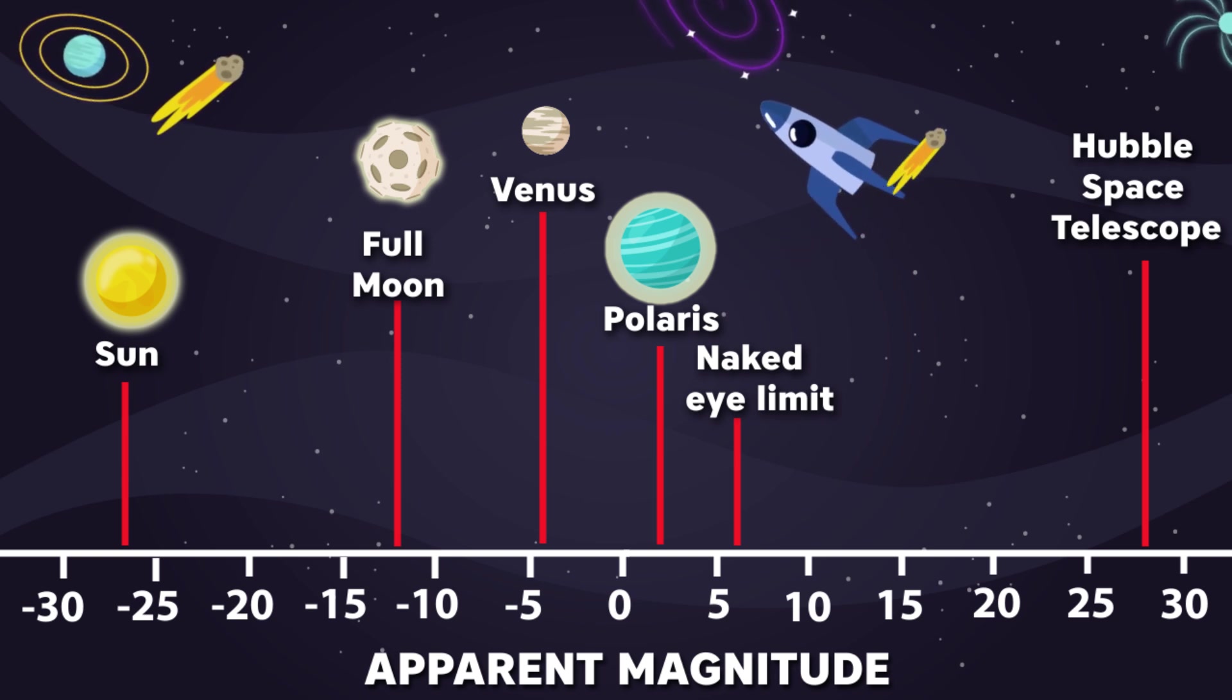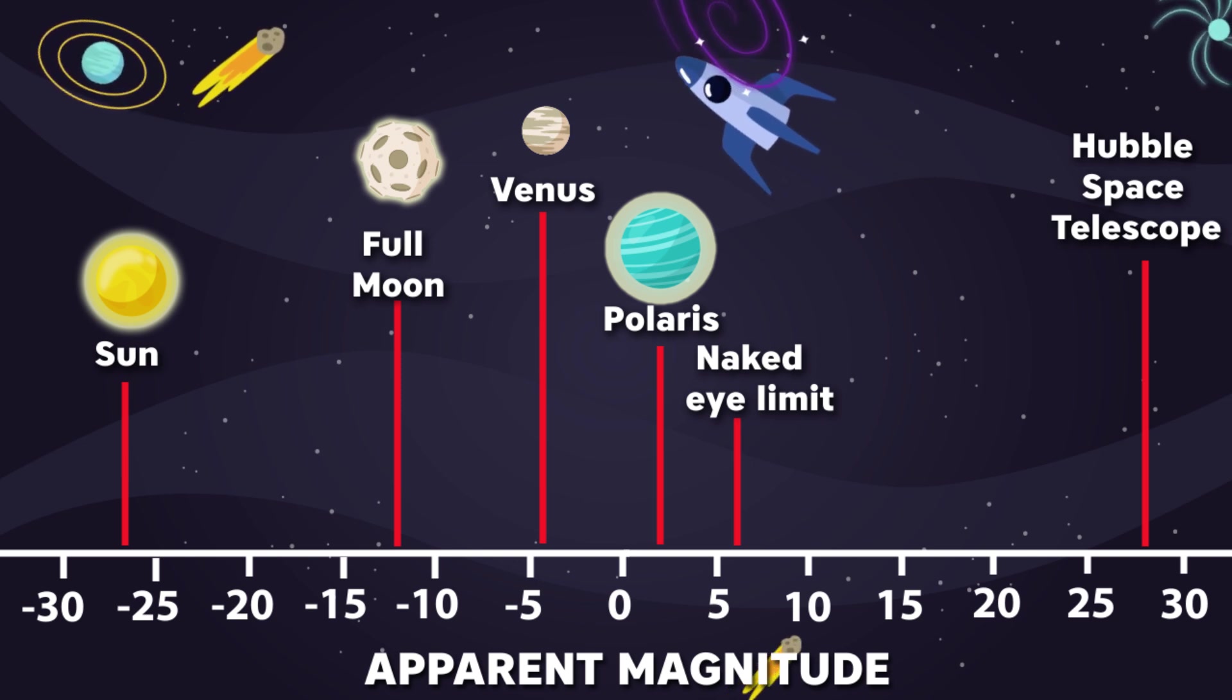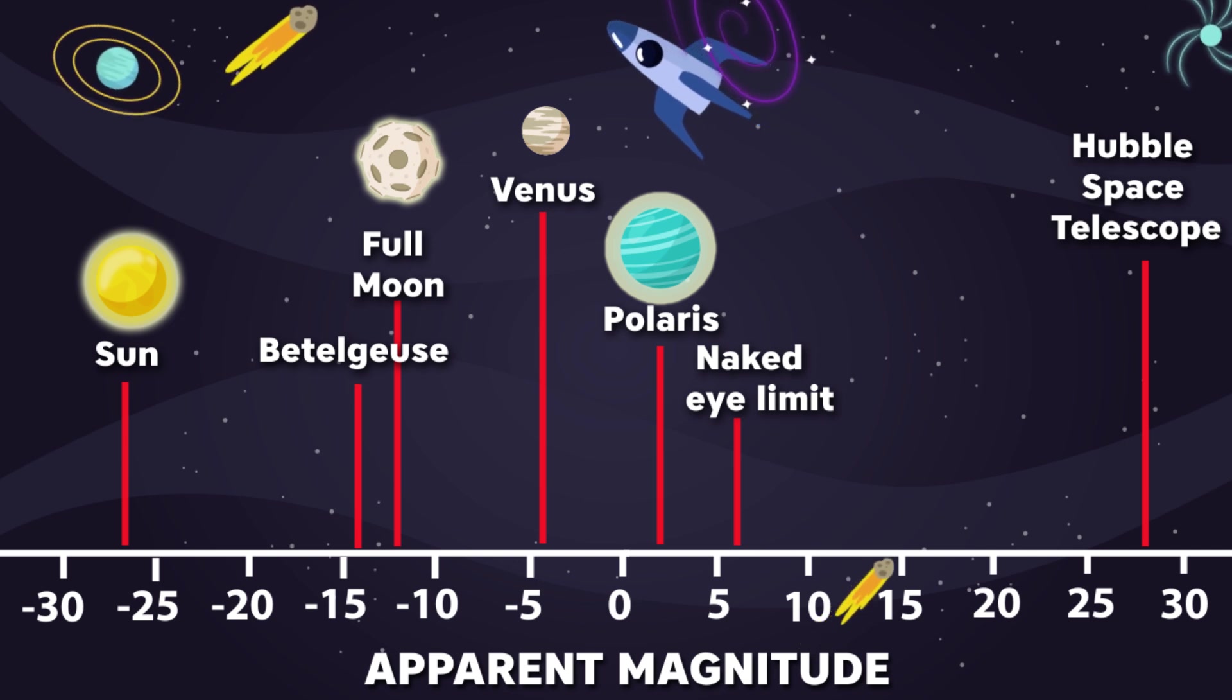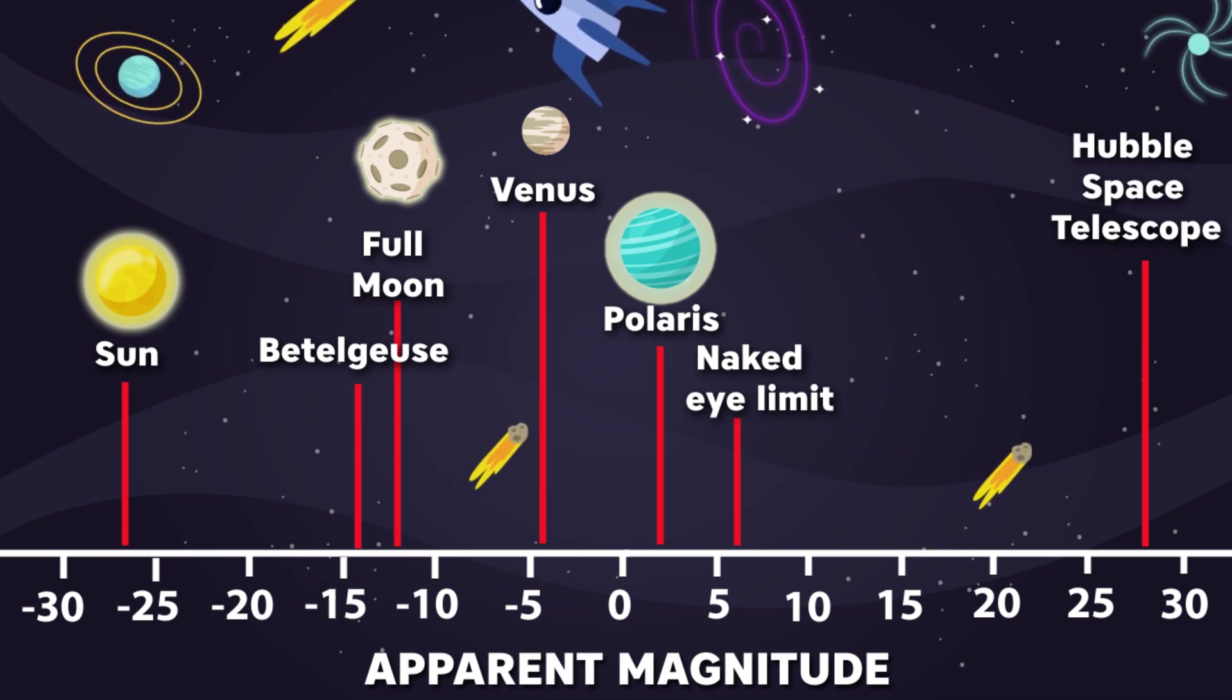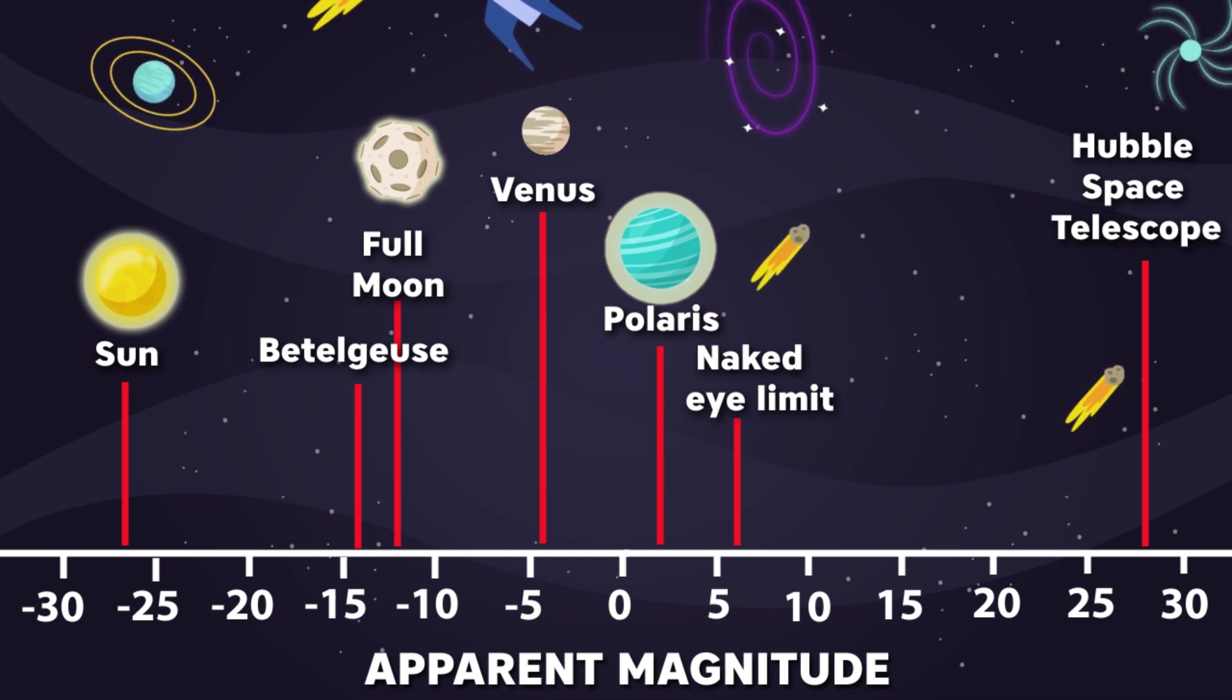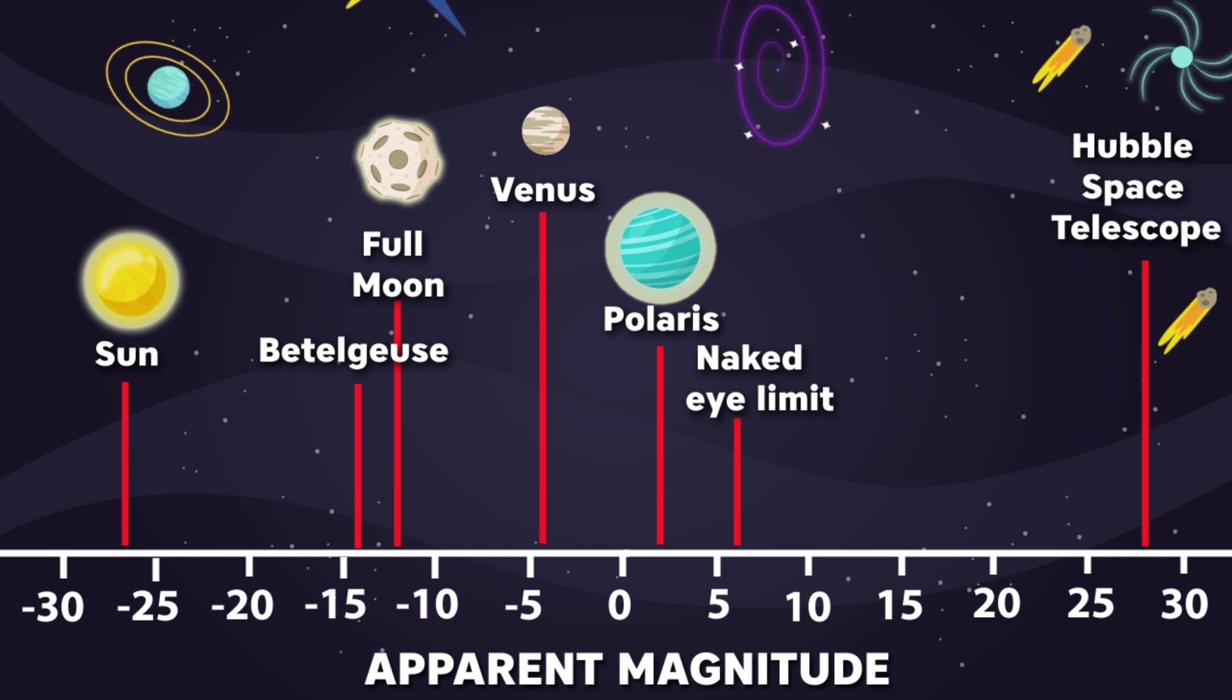Betelgeuse here is expected to be minus 14, brighter than the full moon and it will be up there perfectly visible during the day and it will last for several weeks. Then for about two years, it will slowly decline in brightness until it gets as bright as Venus. This decline will continue for years and decades until it's no longer visible to the naked eye.